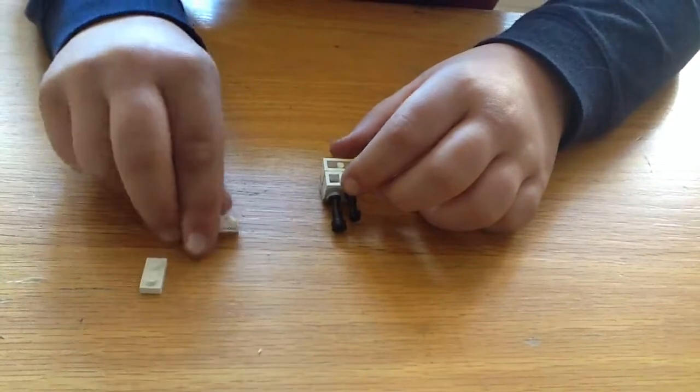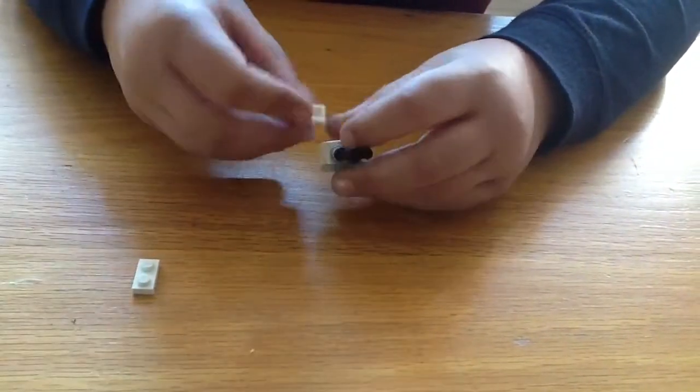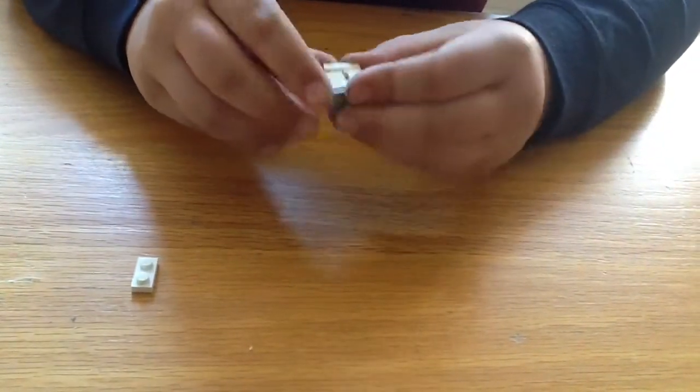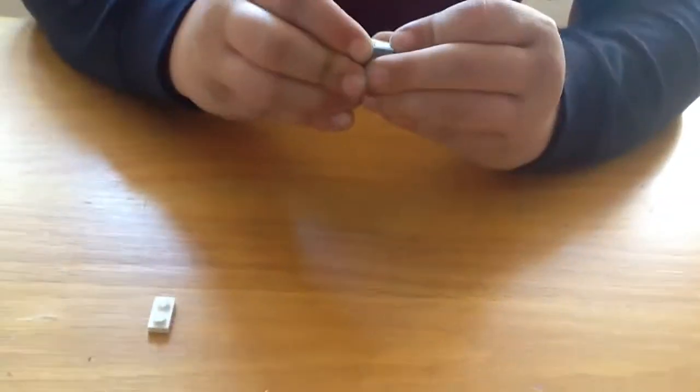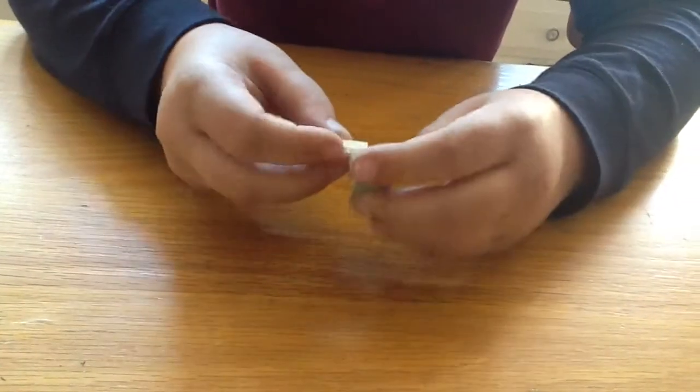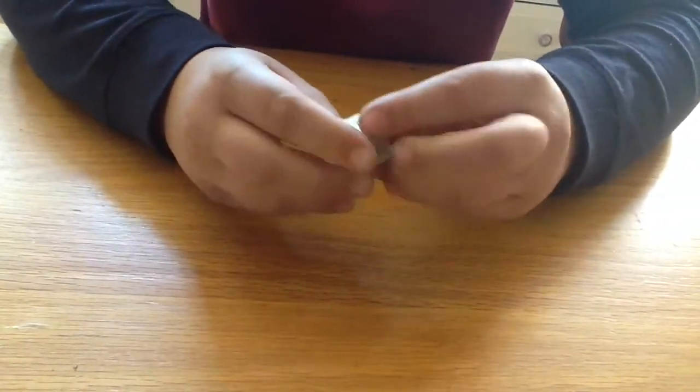Then you get another one of these little two dot plank pieces, put it on there, and the other one goes on there.